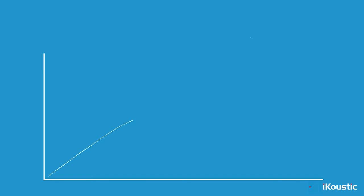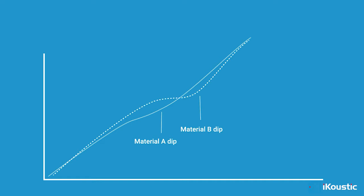Each material's resonant frequency is, in layman's terms, just a natural slight weakness. We'll show you something on the screen now — when we layer up different materials of high mass, you can see that this slight dip is evened out and you'll get a better overall soundproofing result.